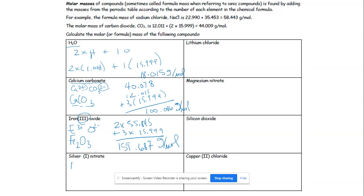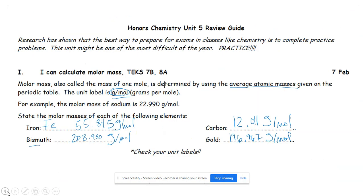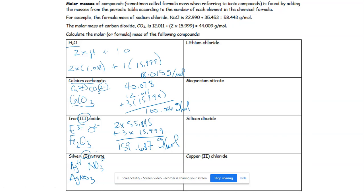Silver(I) nitrate: silver is Ag, and the Roman numeral I means the charge is plus one. Nitrate is a polyatomic ion, NO₃ with a charge of minus one. Plus one and minus one balance, so the formula is AgNO₃. I need one silver (107.868), one nitrogen (14.007), and three oxygens (15.999). Adding those up gives 169.872 grams per mole.